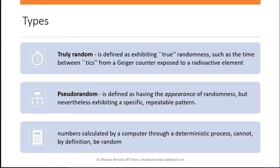Based on their characteristics and how they are generated, we can divide them into two types: truly random numbers and pseudo-random numbers. Truly random numbers are what we understand in general by random — defined as exhibiting true randomness, such as the time between ticks from a Geiger counter exposed to radioactive elements. You cannot determine how many ticks the Geiger counter will register from a radioactive source. A simple example can be noise on the road, or someone speaking — you cannot determine what they are going to say next.